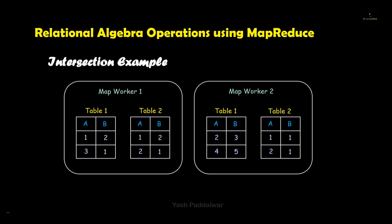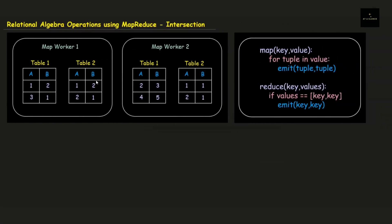Let's start solving this particular example. In this example we have taken two map workers and each map worker contains a section of two tables, named table one and table two. If you look at the first records in both tables, you can see the record is (1,2) in the first table and in the second table it is also (1,2), which means it is the same and hence it will be a part of the final result because the record is common in both tables.